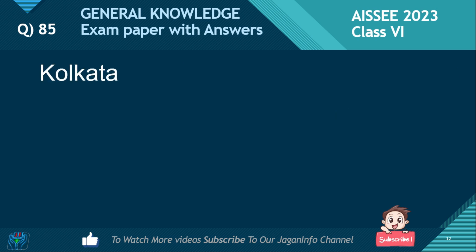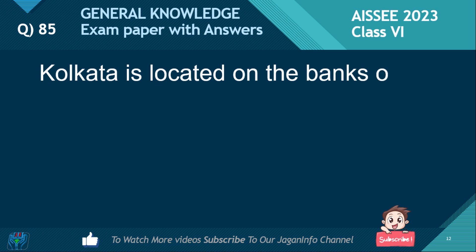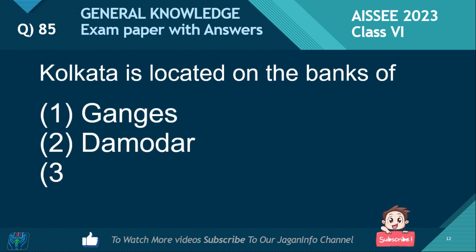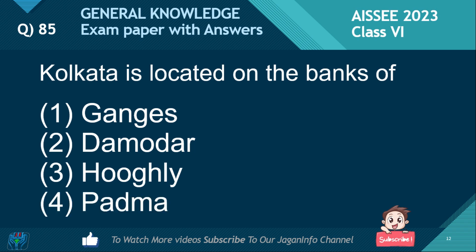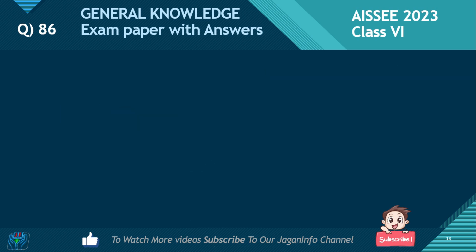Kolkata is located on the banks of which river? Options: Ganges, the Mother, Hooghly, Padma. The right answer is Hooghly River.